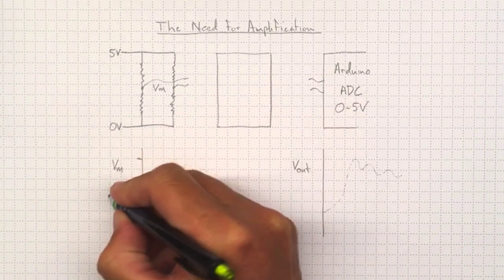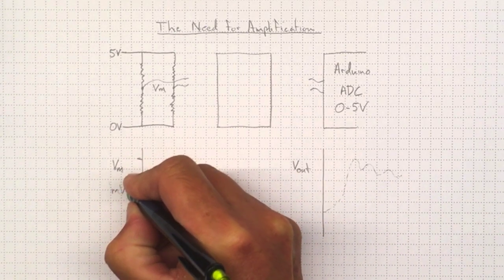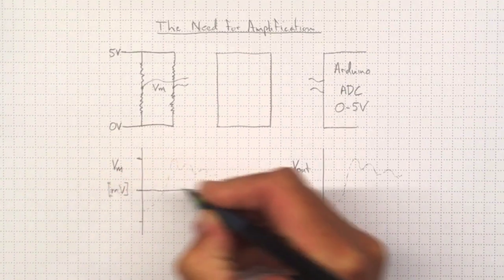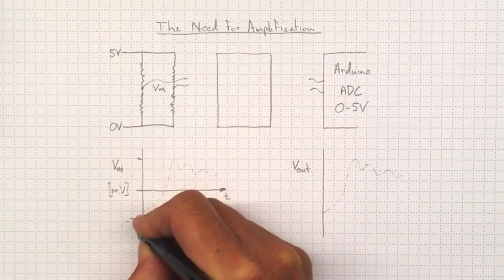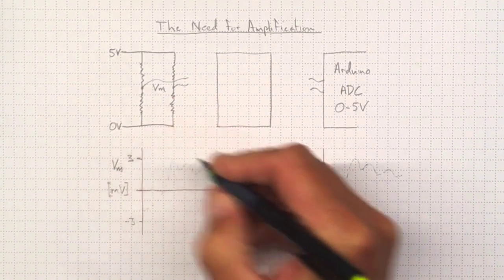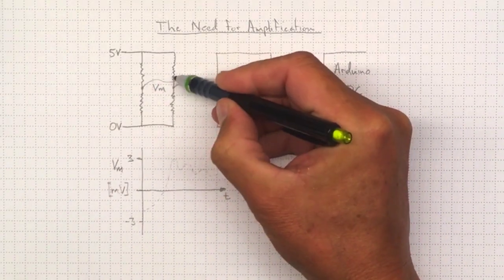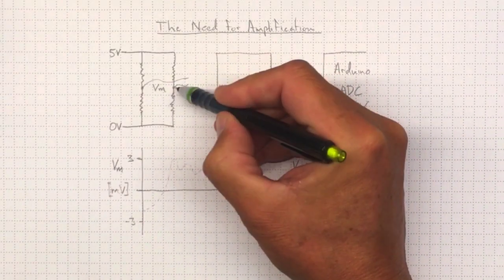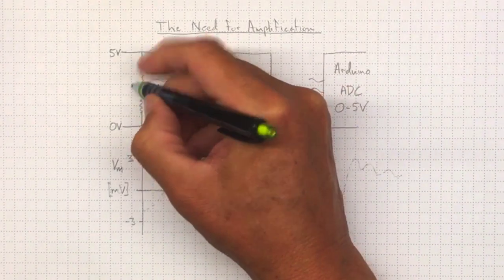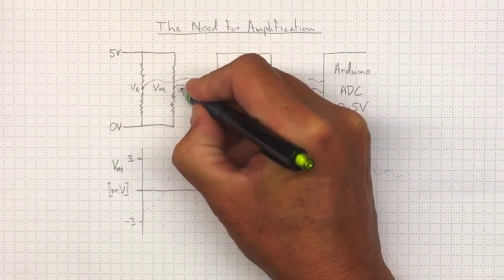So this measured voltage might go from minus 3 millivolts up to about plus 3. Because it's a bridge, it can go either positive or negative. The difference between these two voltages, VA and VB.